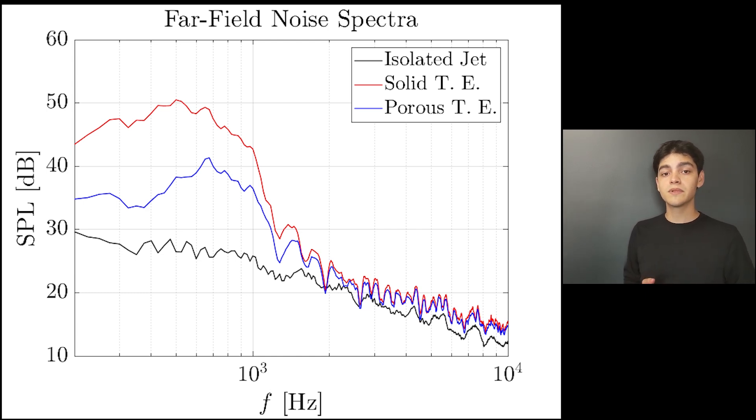On the other hand, when we replace the solid trailing edge with the porous one, we see a significant reduction of the noise from this installation effect, mostly again at the same frequency where we have this bump. And with the porous trailing edge, we are able to reduce up to 10 dB of those 20 dB that we gain with the addition of the plate, so this is a very promising noise reduction solution for jet installation noise.